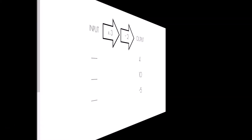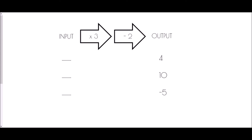In the next situation, we've been given a function machine where inputs go through multiply by three then subtract two to produce the output. But this time we've been told the output and need to find the input. Because we're working backwards from the output, we reverse each operation. So instead of subtract two, we add two: starting at four, four plus two gives us six.